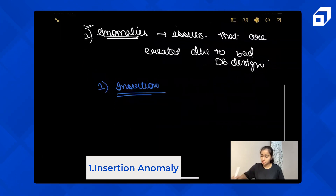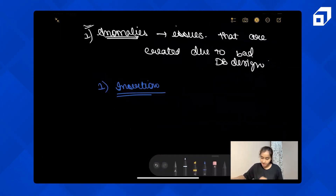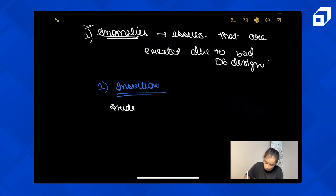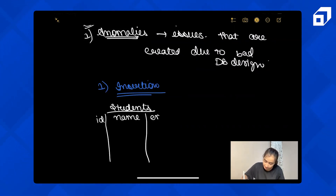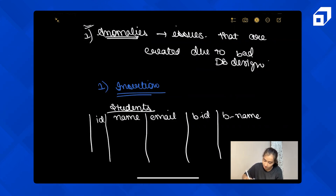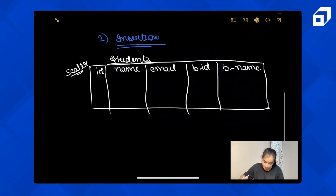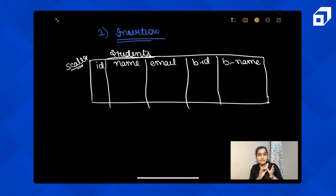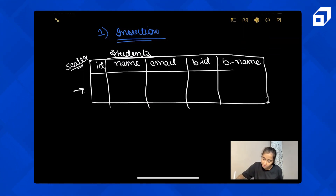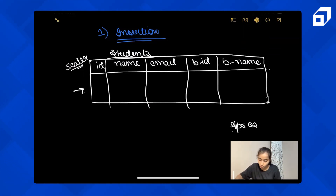To understand insertion anomaly, let's take an example. In Scaler's codebase, you have a students table with columns: ID, name, email, batch ID, and batch name. This is the schema of the students table in Scaler. Now let's say this is the only table Scaler has. Suppose Scaler wants to create a new batch called 'April 22' — can Scaler do that?